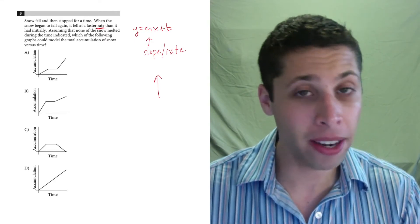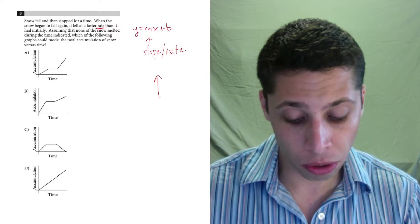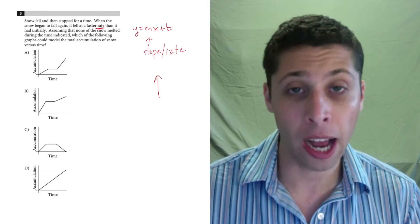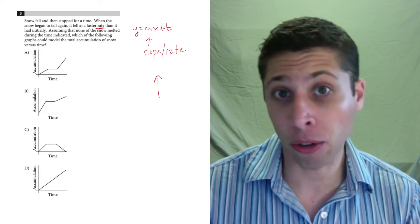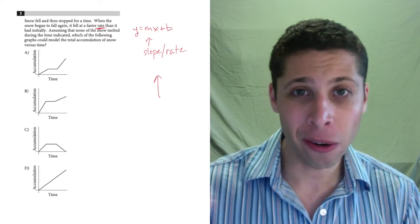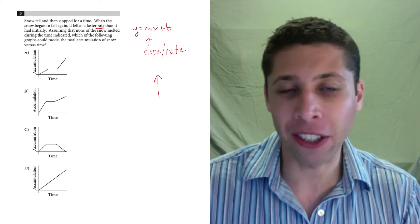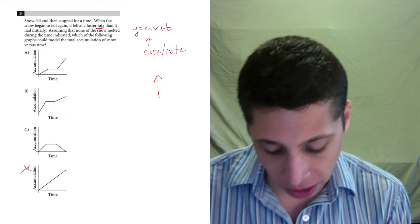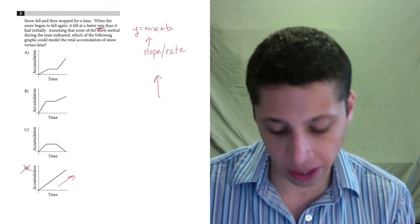But that's about it. So let's just go through the story one piece at a time. The first sentence says, snow fell and then stopped for a time. Well, we need to pick a graph that includes the stopping. And when it stops, it has no slope. It has no accumulation, no rate, no increase. So choice D is wrong because there's no stoppage here. It's increasing the entire time.